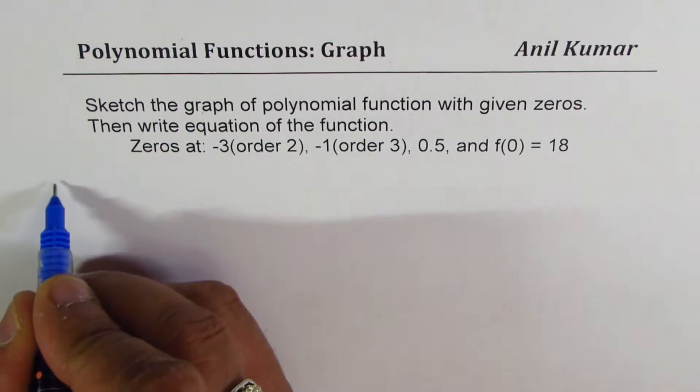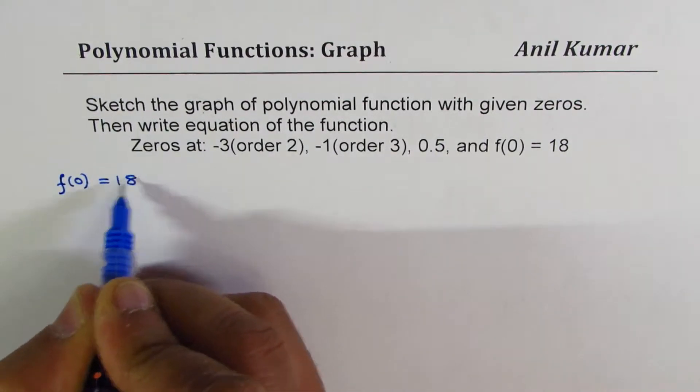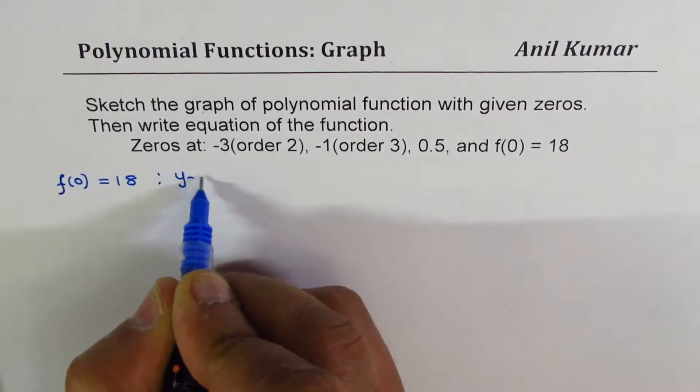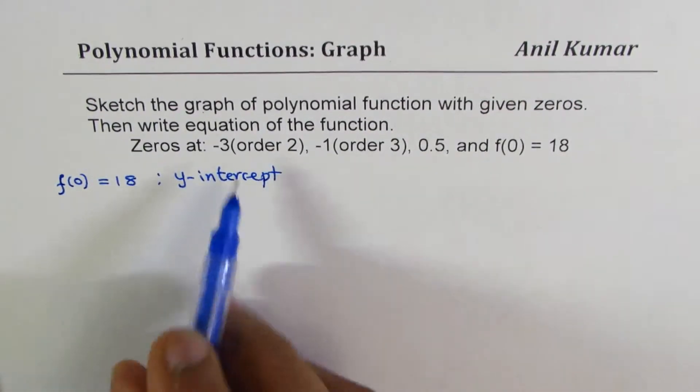So, the information given is something like this. F of 0 equals to 18. That is the y-intercept.